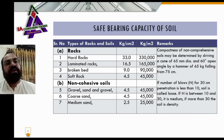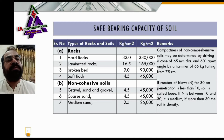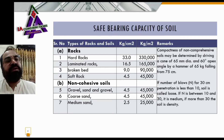Please note: a soil test to determine the compactness of soil. Compactness of non-cohesive soil may be determined by driving a cone of 65 mm diameter and 60-degree apex angle by a hammer of 65 kg falling from 75 centimeters. If the number of blows for 30 cm penetration is less than 10, the soil is called loose. If between 10 and 30, it is medium. If more than 30, the soil is dense.